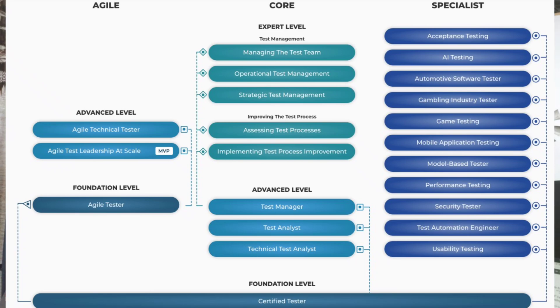The three directions are: Agile, Core, and Specialist. Agile certifications, as the name suggests, are particularly for agile team members. If you are working in the agile industry — which the majority are today — you can get certified with Agile Tester, which is the foundation level of agile, and Agile Technical Tester, which is the advanced level. These certifications are not about agile methodology or Scrum fundamentals; they focus on your role and contribution as a tester within agile methodology.